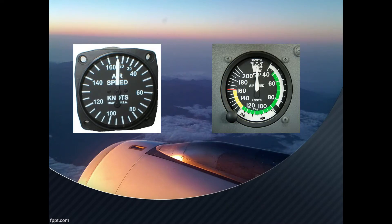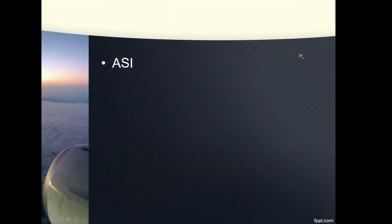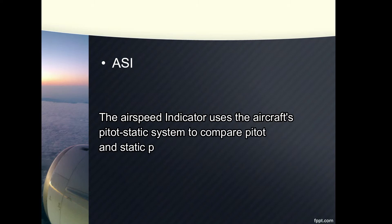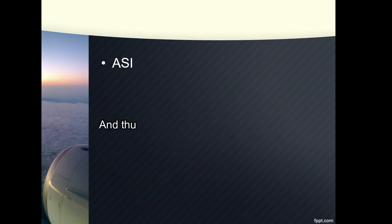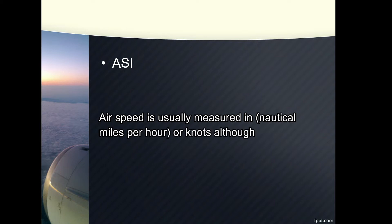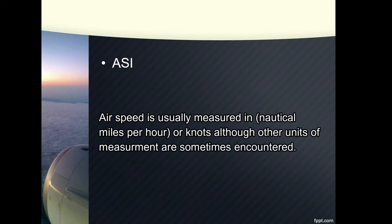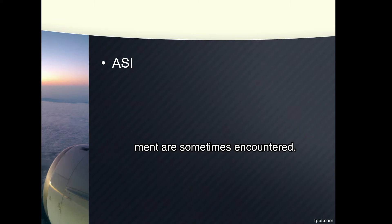ASI or Airspeed Indicator. It is a device for measuring the forward speed of the aircraft. The Airspeed Indicator uses the aircraft's pitot static system to compare pitot and static pressure and thus determine the forward speed of an aircraft. Airspeed is usually measured and indicated in nautical miles per hour or knots, although other units of measurements are sometimes encountered.